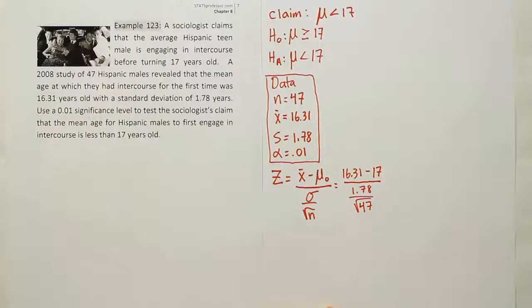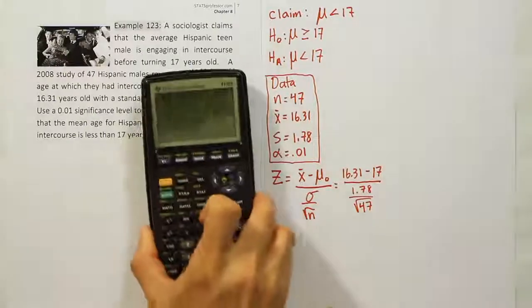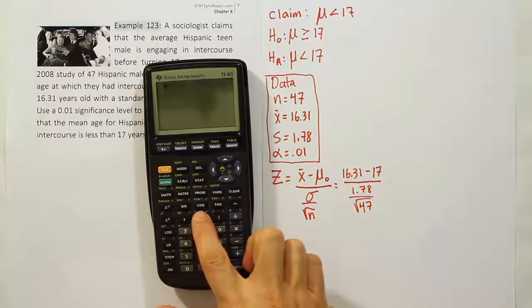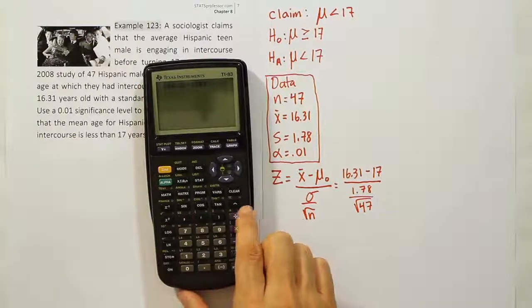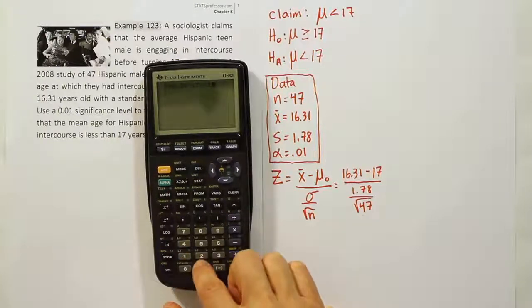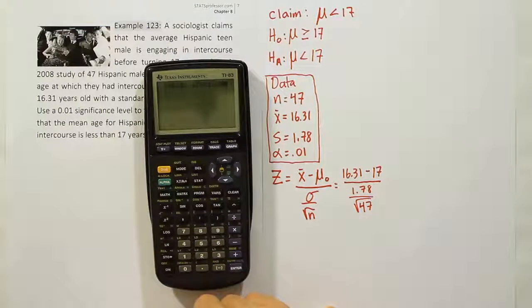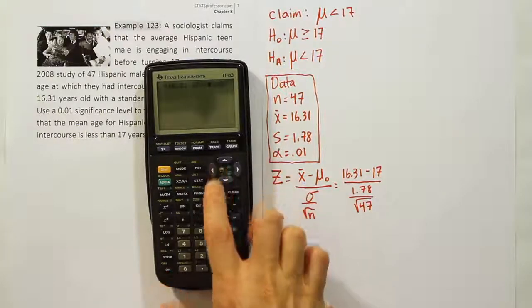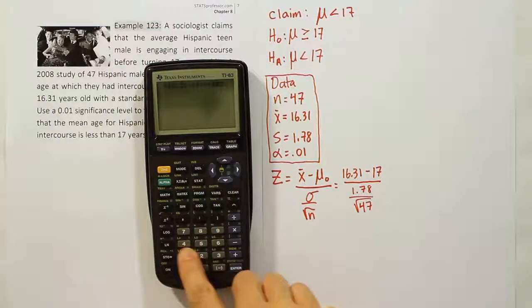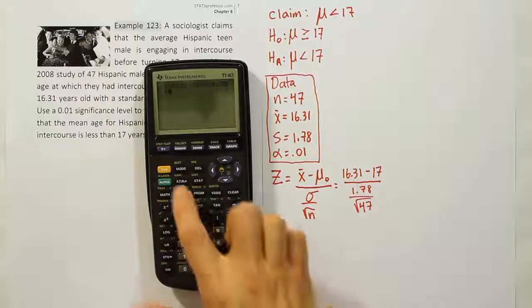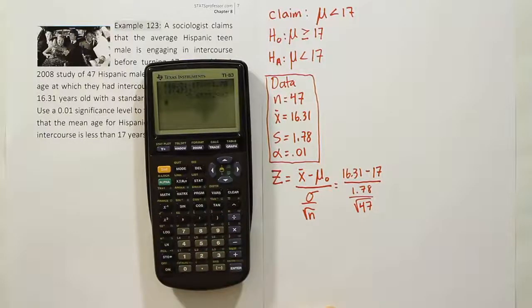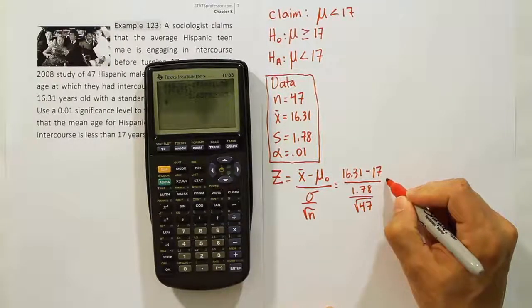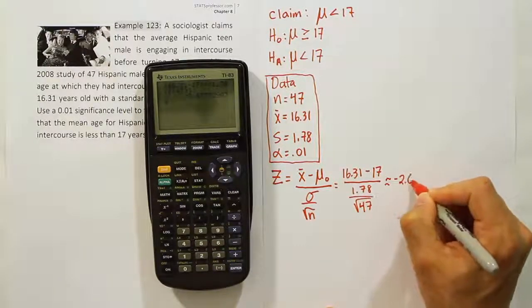Let's put that all together in our calculator and see what it gives us. So we'll have 16.31 minus 17, close that up, divide by 1.78. And then, I didn't put a parenthesis here. Let me make sure I put my denominator in parenthesis. That's 1.78 divided by the square root of 47. Close that up and hit enter.